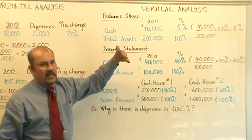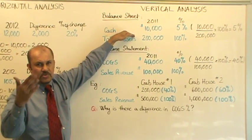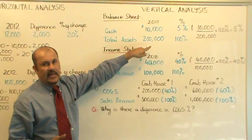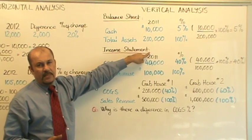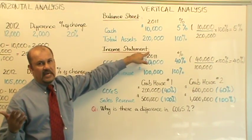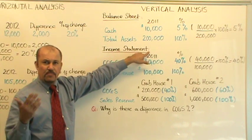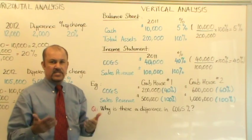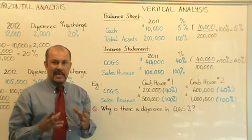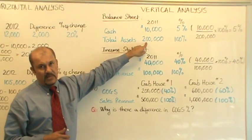Similarly, you can take any item on the balance sheet — accounts receivable or inventory — and express it as a percentage of your total assets. Or you can take a liability account like accounts payable and express that as a percentage of your total liabilities and equity combined, which would be the same number.